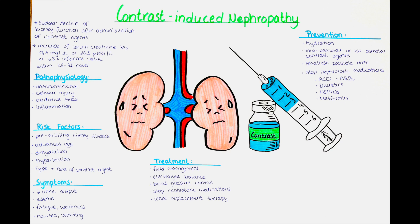How does contrast induced nephropathy develop? The exact mechanism is not fully understood, but it is believed to involve a combination of direct toxic effects on the kidney cells and changes in renal blood flow. It is thought that contrast agents, particularly high osmolar or ionic agents, can cause vasoconstriction of the renal blood vessels.